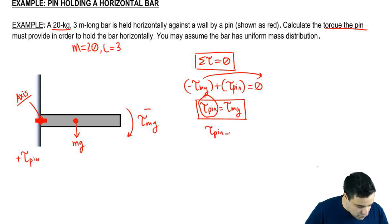So torque of pin will be Mg. I'm going to expand the right side: R sine of theta. Now, the mass is 20, gravity 9.8.